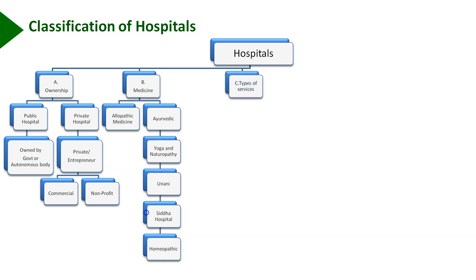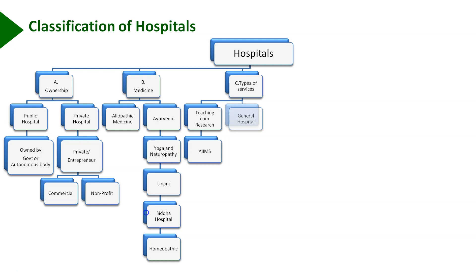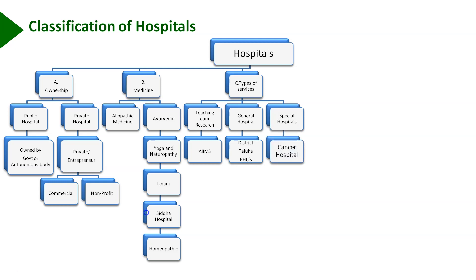Hospitals can also be classified based on the types of services they render. That may be teaching-cum-research hospitals — the classical example being the All India Institute of Medical Sciences in Delhi. Other hospitals include general hospitals providing medical care, which includes district hospitals, Taluka hospitals and primary health care centers. Special hospitals concentrate on a particular organ or aspect of the body, and include cancer hospitals, TB hospitals, psychiatric hospitals for treating mental conditions, and dental hospitals.